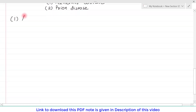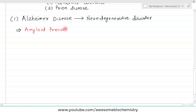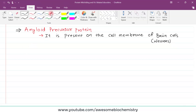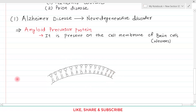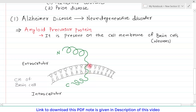Alzheimer's disease is a neurodegenerative disorder. The protein of interest is the amyloid precursor protein, which is present on the cell membrane of brain cells, or neurons. It is a transmembrane protein. The C-terminal is inside and the N-terminal is outside the cell, and some part of this protein passes through the cell membrane.